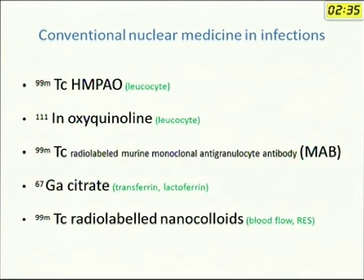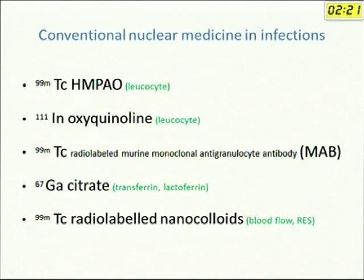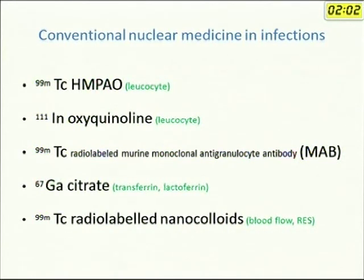Conventional nuclear medicine in infections has a battery of investigations. There are nucleotides that can be labelled to leukocytes, a monoclonal antibody that can specifically label granulocytes, gallium citrate which is a very age-old and time-tested technique, and nanocolloids. When we say conventional nuclear medicine in infection, we should not think it is all old stuff — it is even now as good as, and in many cases much better than, PET in several situations.